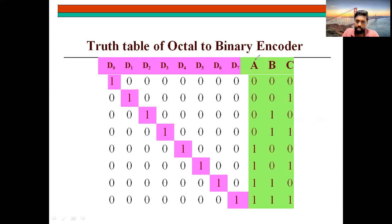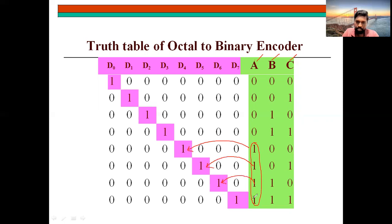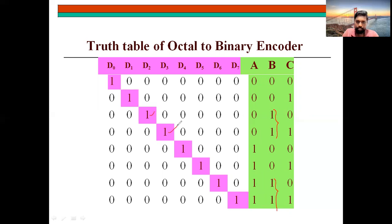By using K-map, or directly, you can write the equation for A, B, and C. For A, looking at the four ones in column A: A = D4 + D5 + D6 + D7. For B, there are two pairs of ones: B = D2 + D3 + D6 + D7. For C, the ones are alternating: C = D1 + D3 + D5 + D7.